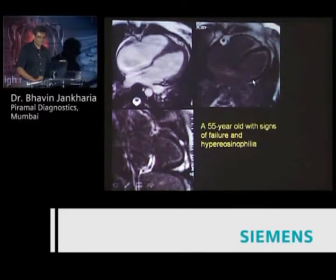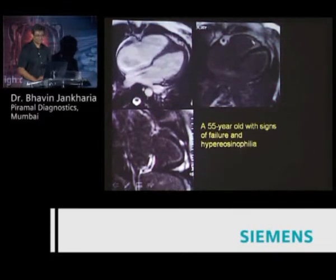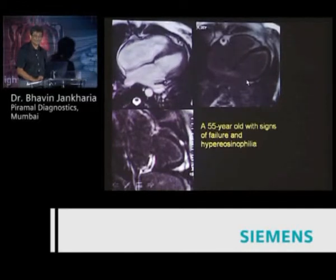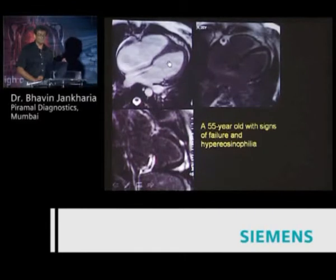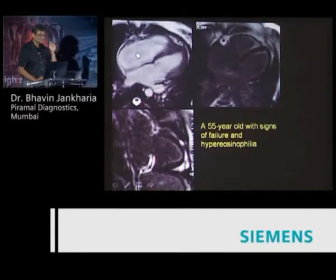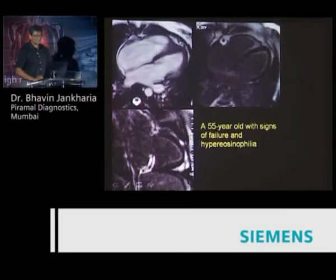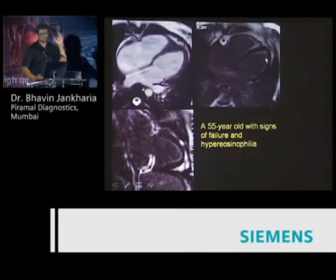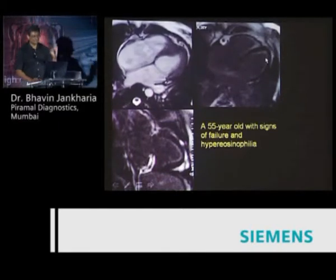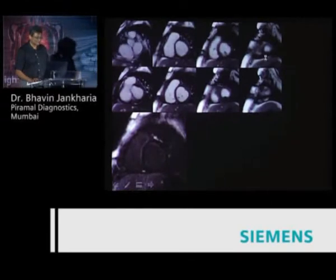Typically you see this arrow-shaped diffuse subendocardial enhancement. It's not infarction because it is not territory-bound, and it is arrow-shaped on your four-chamber view, which is the view on which we make the diagnosis. It may only involve the LV, it may only involve the RV, or it can be biventricular.